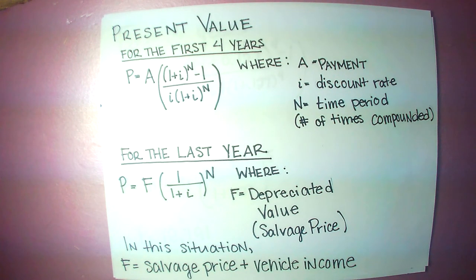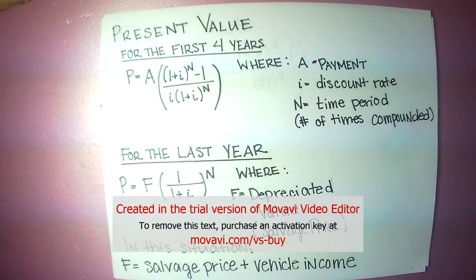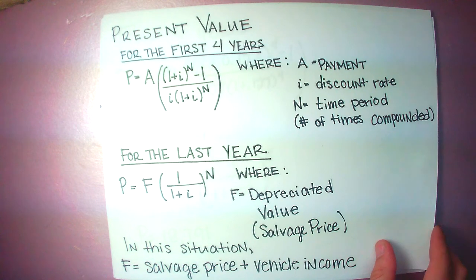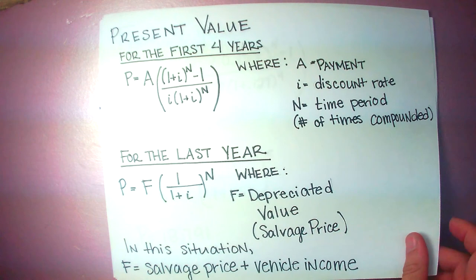For the last year, we have F, which is the salvage price plus the vehicle income for that last year, multiplied by one over one plus that discount rate to the power of the fifth year.